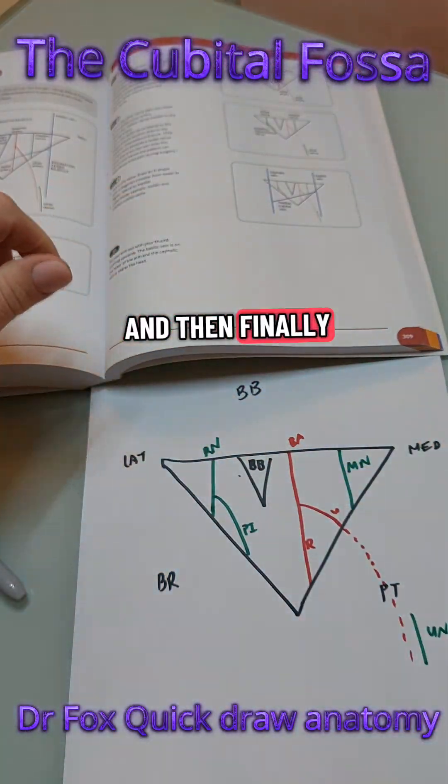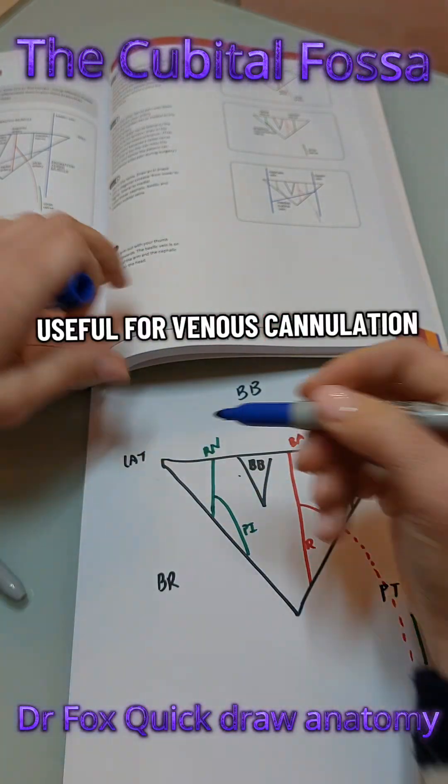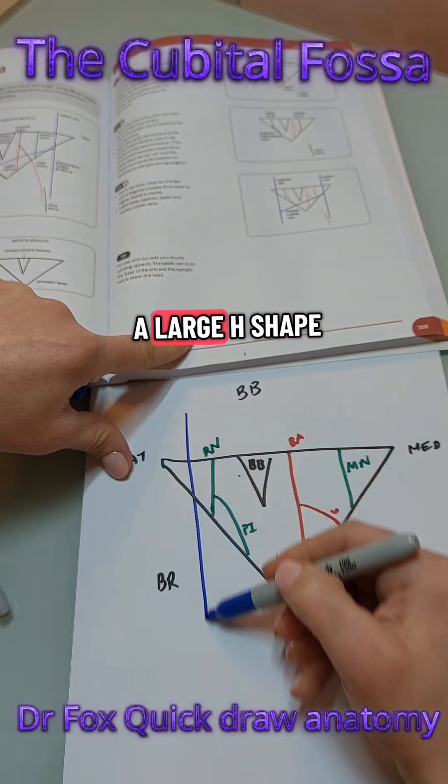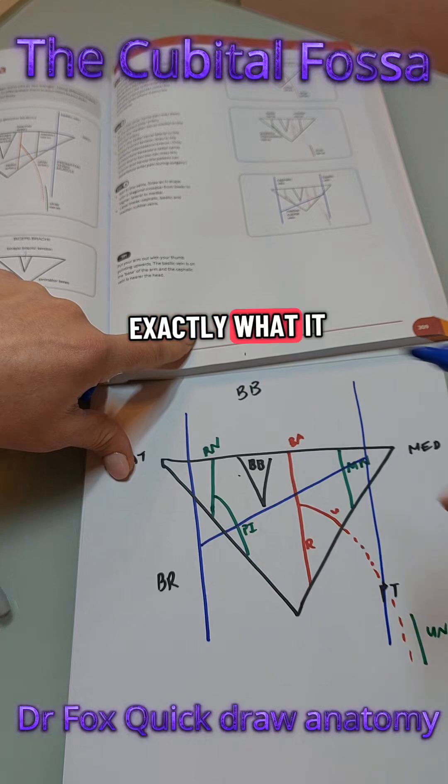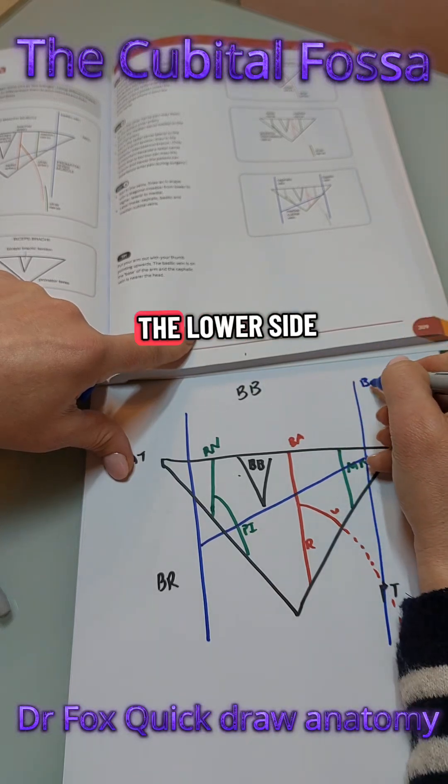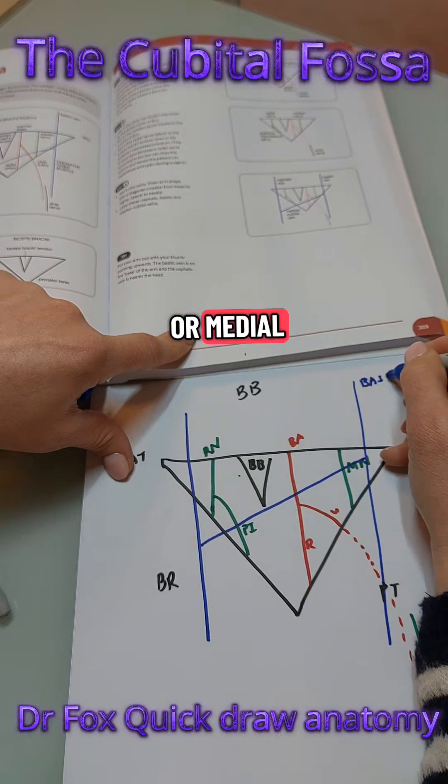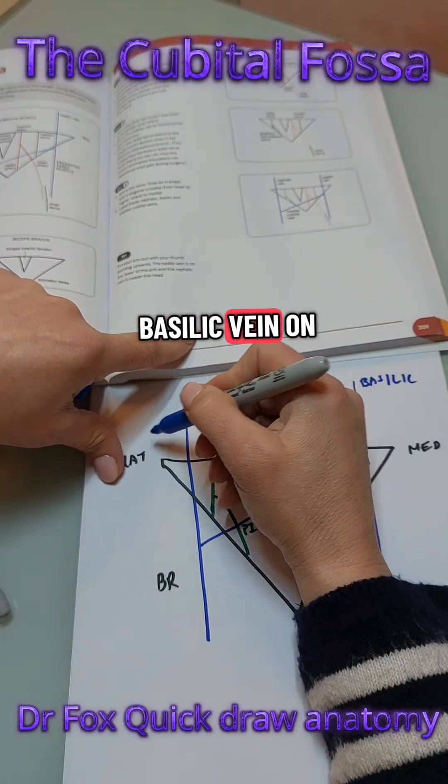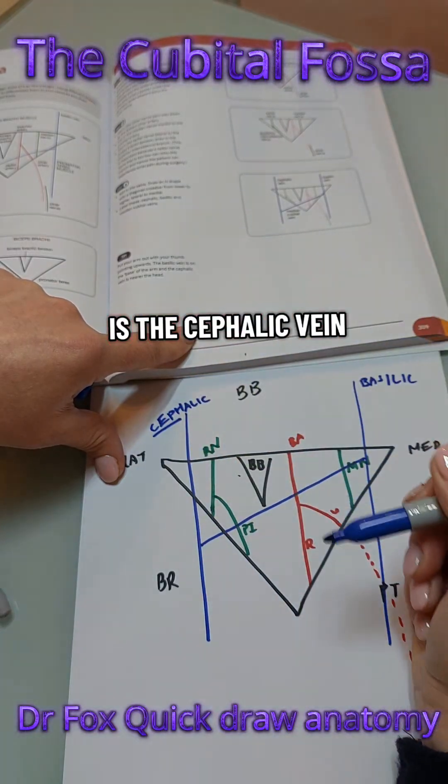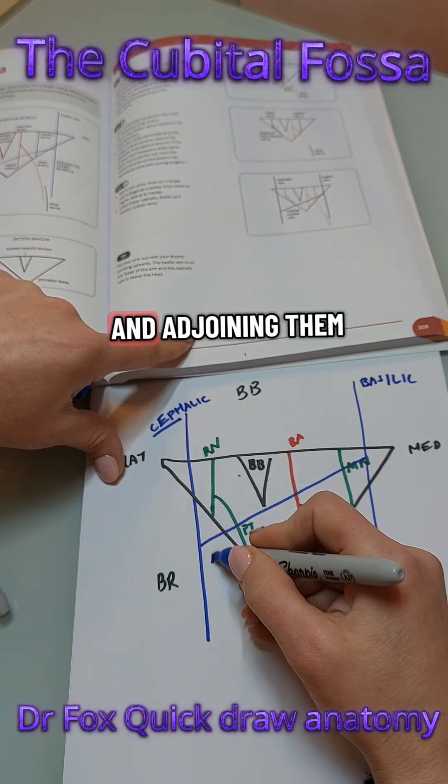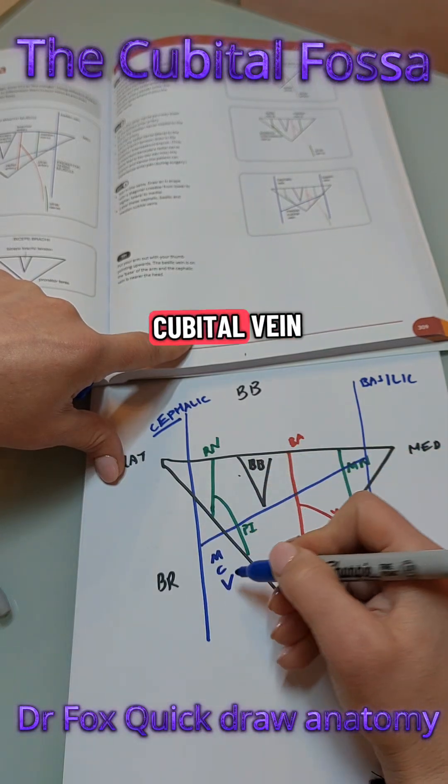And then finally we think about the veins, so this is useful for venous cannulation. I draw a large H shape, obviously it varies between people exactly what it looks like. And then on the lower side or medial you have the basilic vein. On the upper side nearest the head is the cephalic vein and the join in them is a median cubital vein.